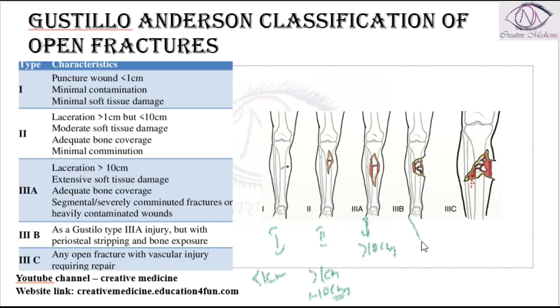Then in grade 3b, it is similar to grade 3a, but in grade 3b the periosteum is damaged. There is periosteal stripping and bone exposure.